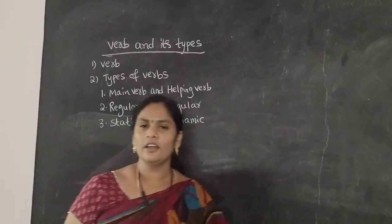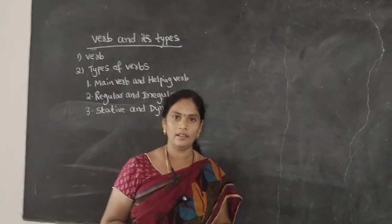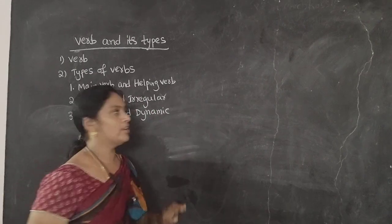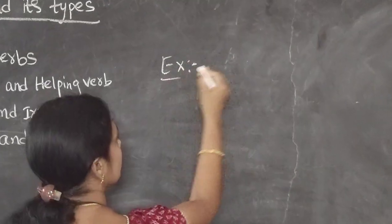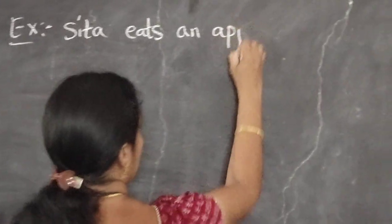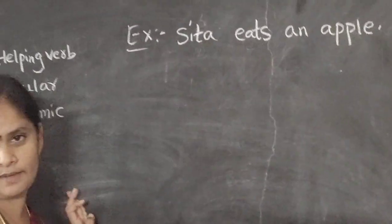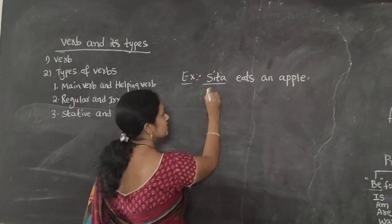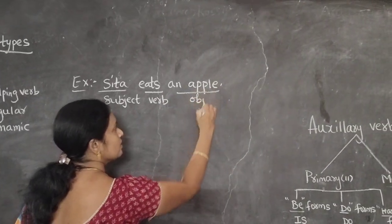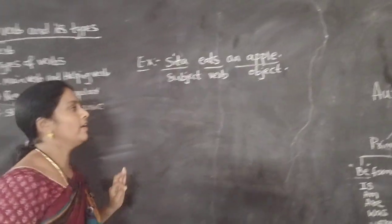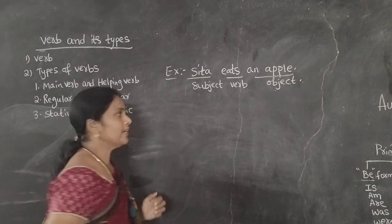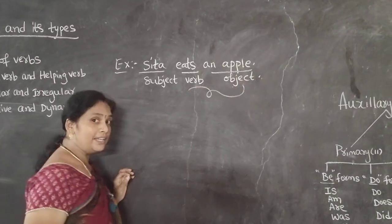Do you know what is a sentence? Yes, a sentence is made of a subject and a predicate. So have an example. This is an example. As you know, Sita is the subject, eats is the verb, and apple is the object. So I have used here a predicate. So what is a predicate? A predicate is a combination of verb and object.